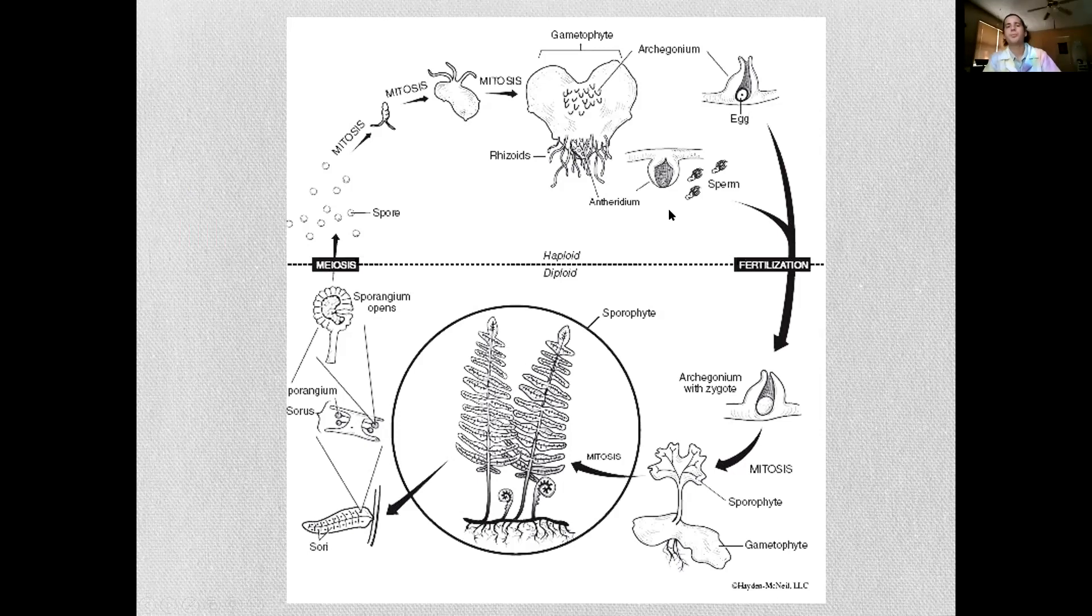So this little tiny structure is microscopic. We're going to look at a microscope slide of it in a bit and you'll almost never notice them in the wild unless you go out specifically looking for them. They produce egg and sperm and once they meet they undergo fertilization and from that gametophyte grows your sporophyte. So it eventually turns into this very large frond which you probably will notice.